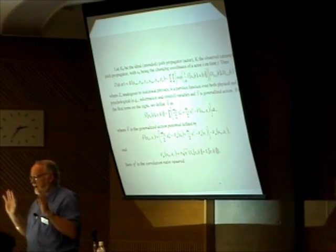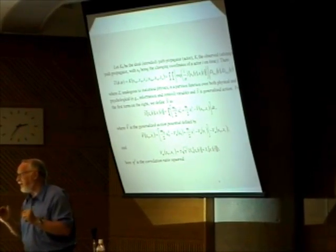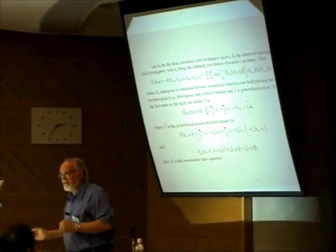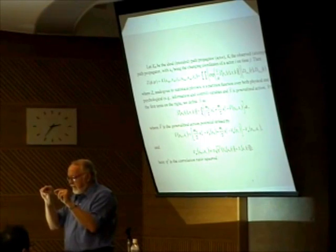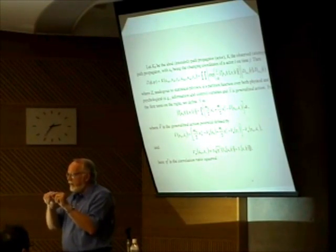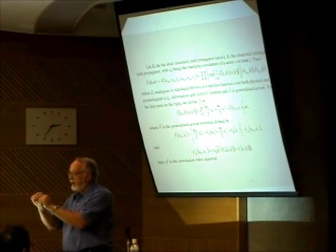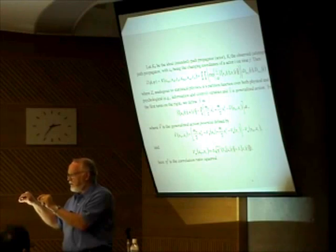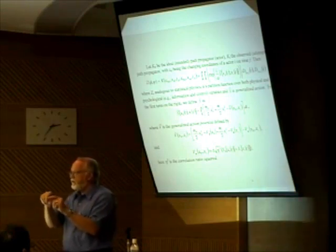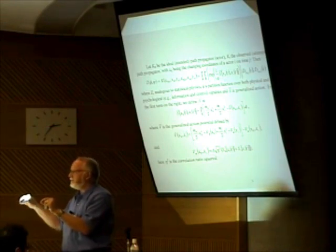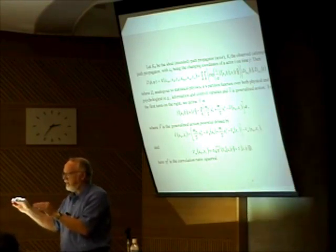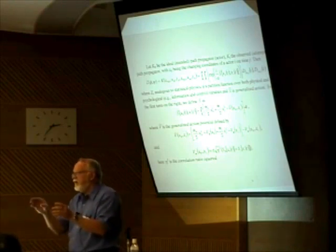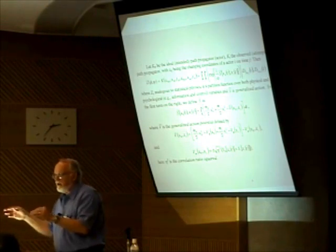If you were moving on one path, any place where you are at the present moment means you got there through the application of a certain amount of control. Where you're going means there is a certain amount of control still to be applied. So there's the work you've done and the work still to be done; the impulse forces you've applied and those still to be applied; the torque for changing direction that you've done and the torque still to be done. You can parameterize that space in terms of the measure of where you've come from and where you're going.